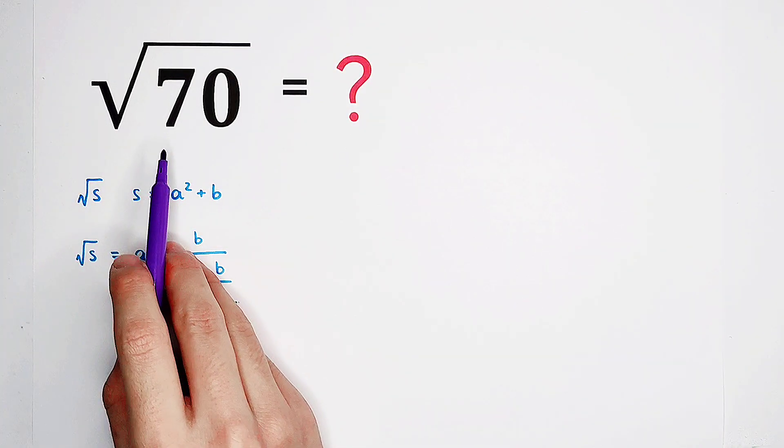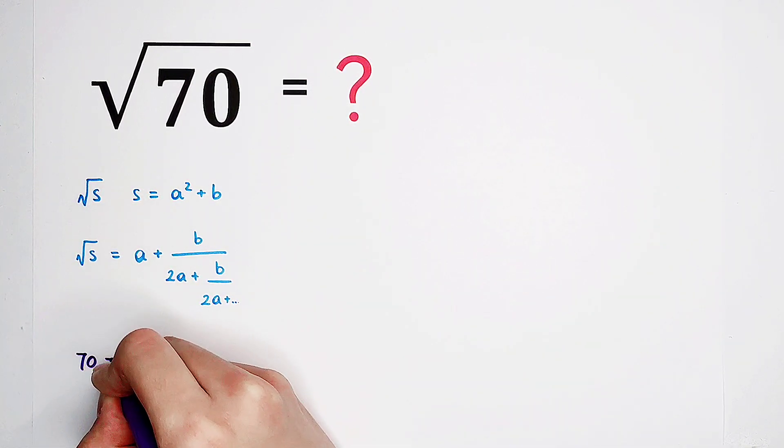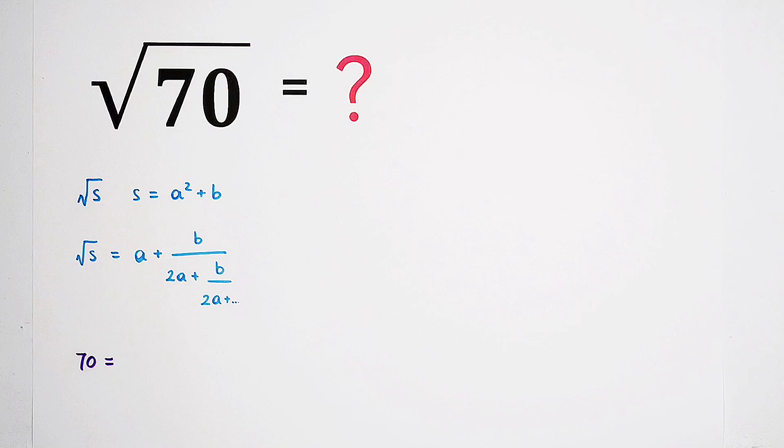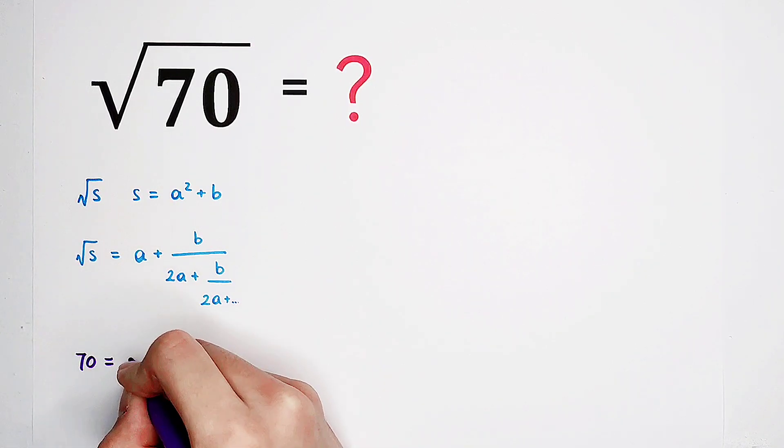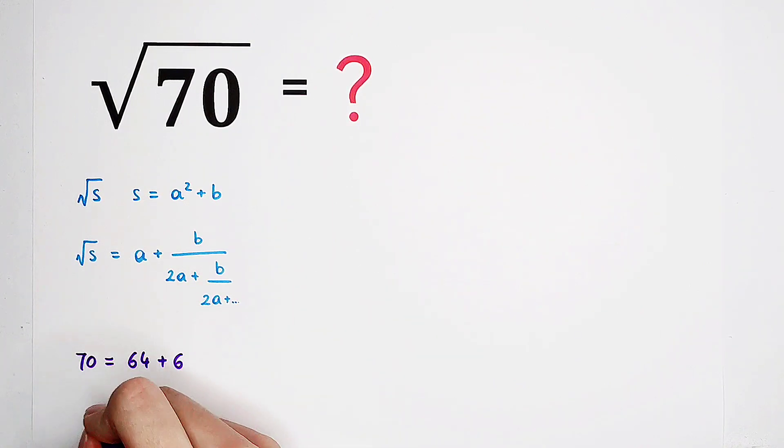What about the square root of 70? You know, I know, and we all know that 70 can be written as 64 plus 6. 64 is 8 squared, so it is 8 squared then plus 6. Very good! Then what shall we do? Formula!